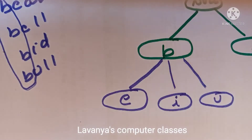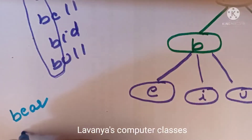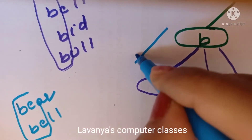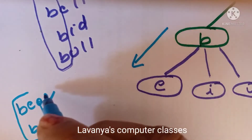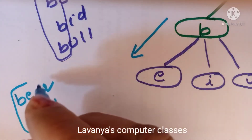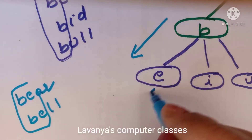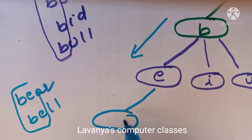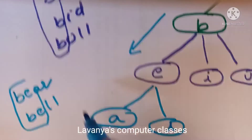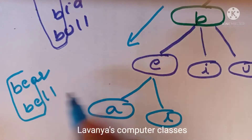From B-E, the next characters are A (from bear) and L (from bell) — two different characters, two different pointers: A and L. From B-E-A, the next character is R. From B-E-L, the next character is L. So B-E-A-R and B-E-L-L are formed.